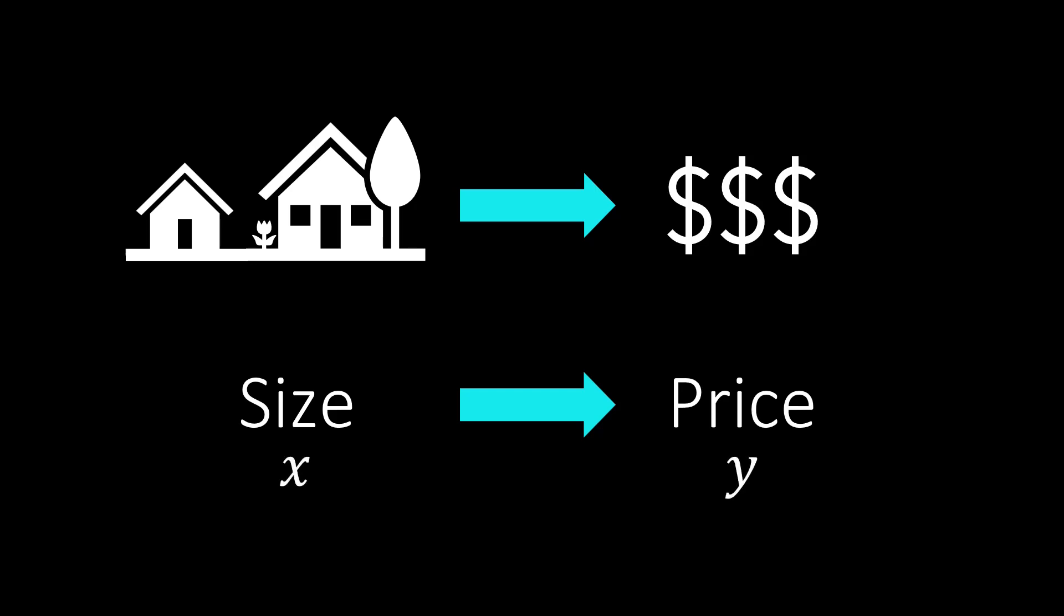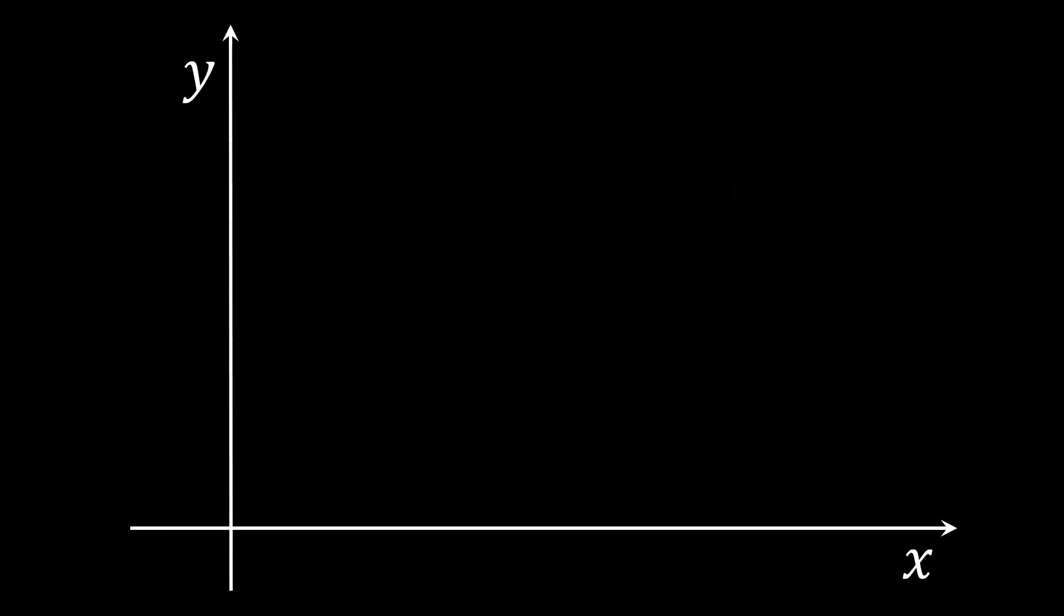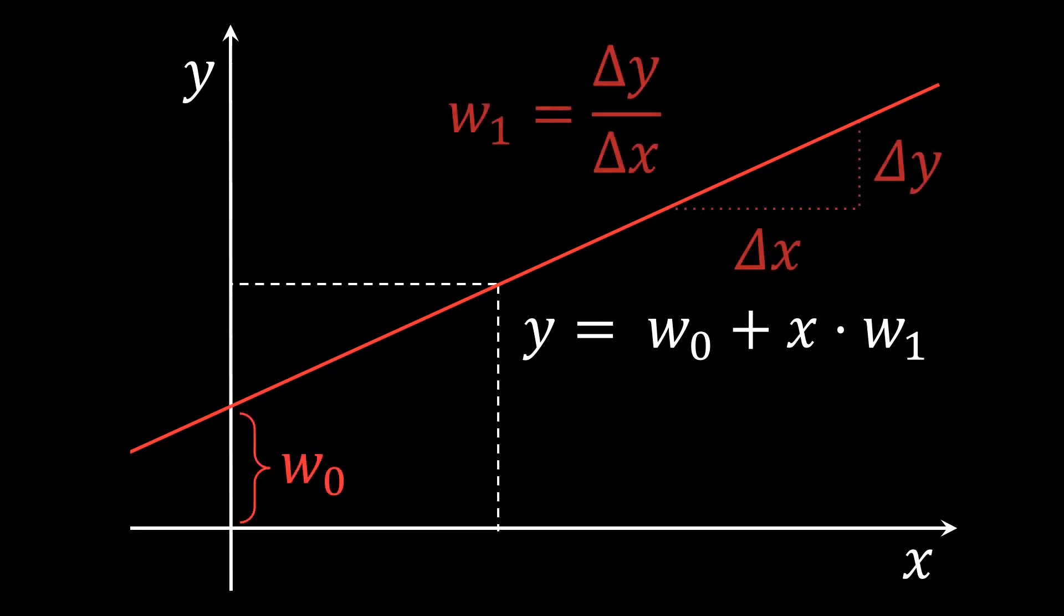Let's visualize what we want in a diagram. We are looking for a linear function that given an input x, computes an output y. The relation between x and y should be linear, so the output y can be computed as the sum between an initial offset weight w0 and the input x multiplied by a weight w1. This linear function defines a line in the xy plane and the two weights w0 and w1 define its vertical offset and its slope, respectively.